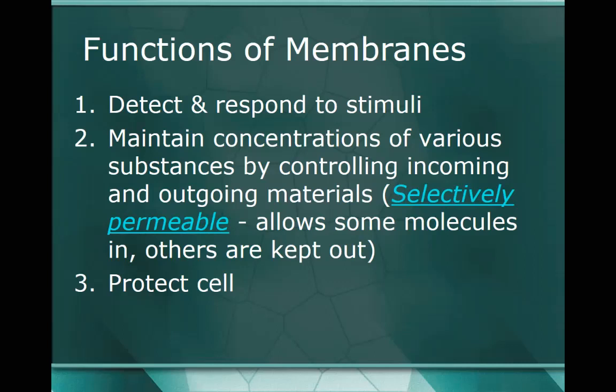Number three: its job is to protect the cell. This is especially true for animal cells because animal cells don't have a cell wall. We have a skeleton that helps us with our structure in terms of our organism, so we don't rely on cell-level protection from a cell wall for rigidity. The way we do it is we use our cell membrane to act as that protective barrier between the cell and the external environment.